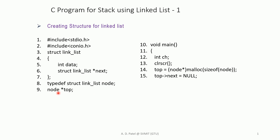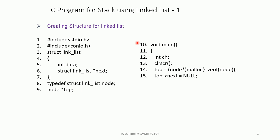On the next line we have written node *top, which declares a pointer variable named top with data type node, which is equivalent to the linked list structure. So top will have two variables: data and pointer next. Top is declared globally because it is not inside any block or main function.